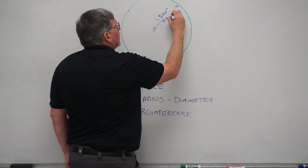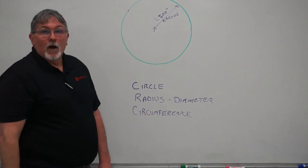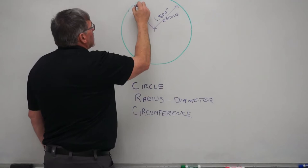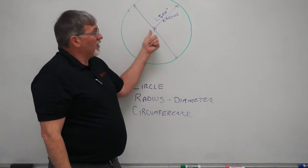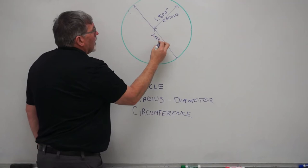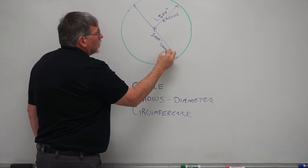So what is our diameter? Our diameter is simply twice that distance, right? That makes sense. It's this distance from here all the way across a straight line that intersects the center point. And in this circle, that would be a 3-inch diameter. So our diameter here is 3 inches.